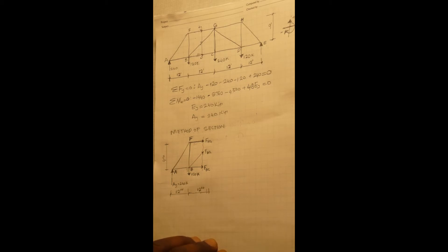As you can see, the reactions for this truss have already been calculated. So we have the reaction at joint A as 240 kips and at joint E also 240 kips.